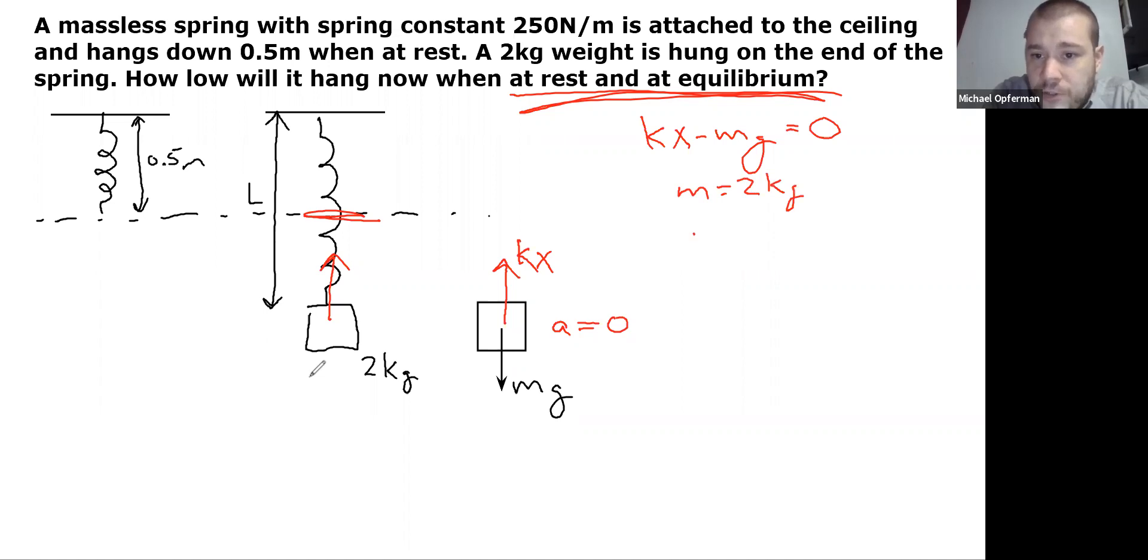That's given. I know g is always 9.8 meters per square second. I'm given in the question here, k equals 250 newtons per meter. The only remaining thing there is x.